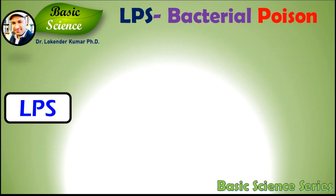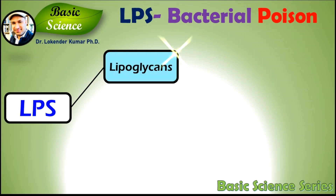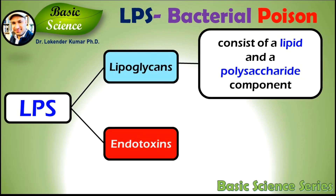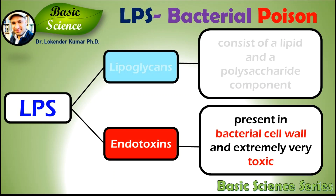Lipopolysaccharides are also known as lipoglycans and endotoxins. They are called lipoglycans because they consist of a lipid and a polysaccharide component. They are called endotoxins because they are present in the bacterial cell wall — means endo — and are extremely toxic to the human body.